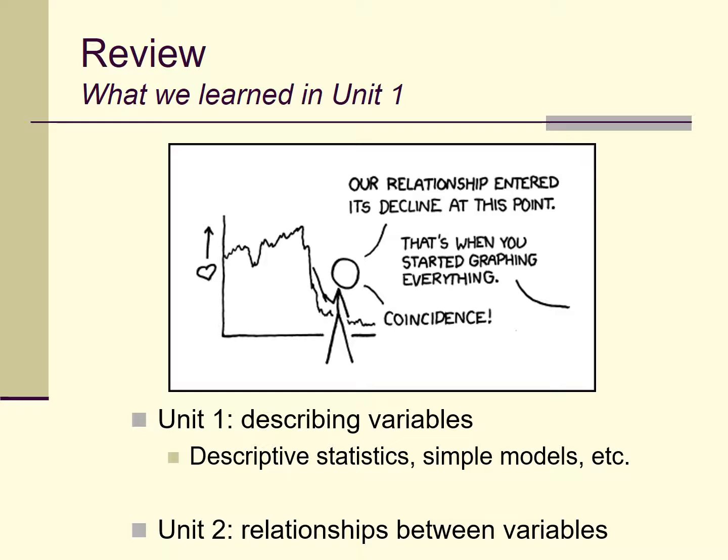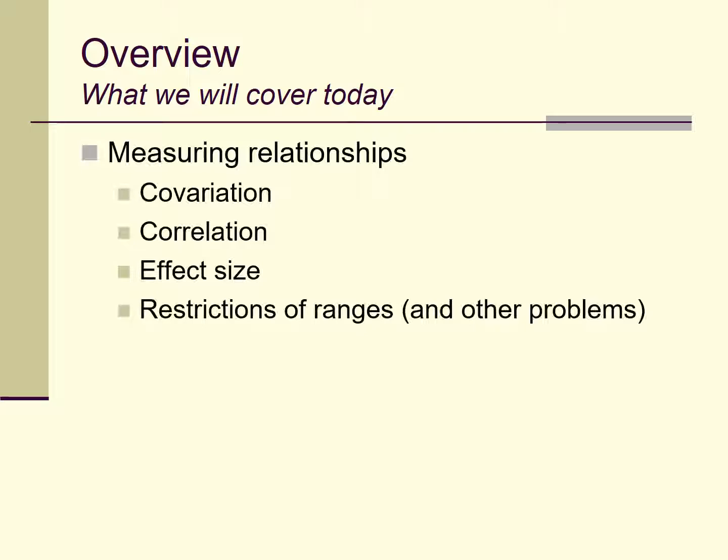Unit 2 builds on that and begins to talk more about relationships between variables. This is important when studying almost anything, especially in psychology and the behavioral sciences, because we're interested in understanding to what extent two or more variables change along with each other, or to what extent one variable can be predicted from another. Using that idea, let's talk about correlations.